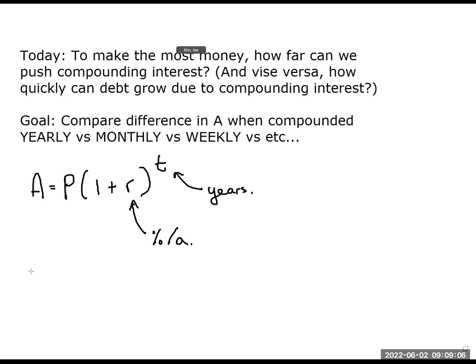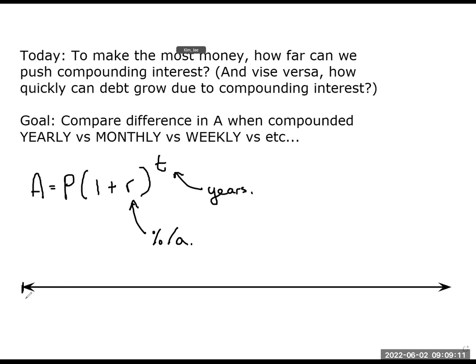How about I do this as a visual? Let's pretend this line represents one month. So that is from here to here it's January, from here to here it's February, from here to here it's March.